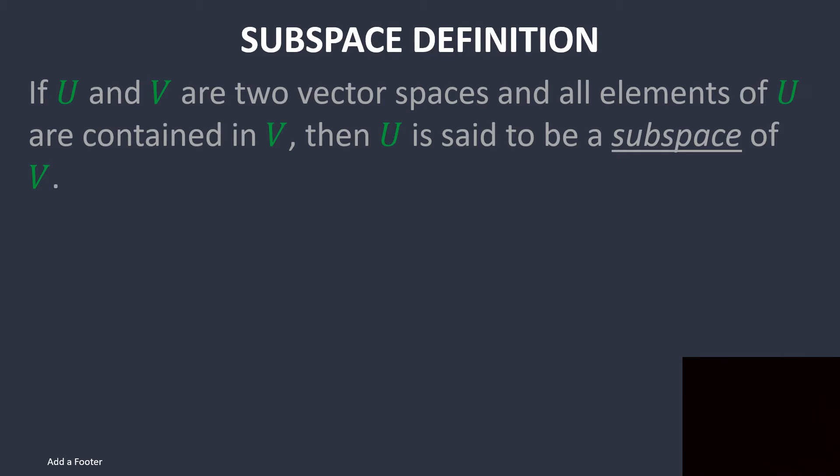And then this leads us to our first definition, which is a subspace definition. Basically saying that if there are two vector spaces and one vector space is contained within another one, which you can kind of visualize like this. If this is vector space V, if there's another vector space within it U, then all of the elements within U will be within V. And so U is a subspace of V.